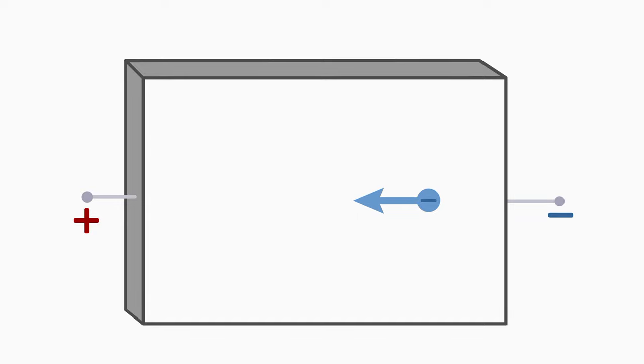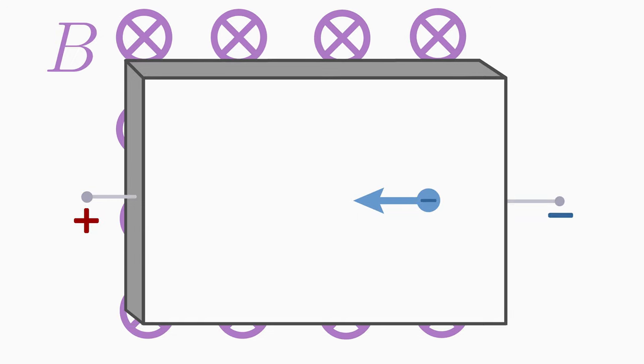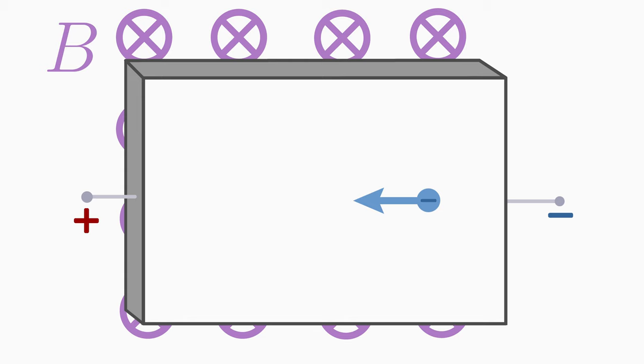But if you now put the metal into a homogeneous magnetic field B, whose field lines penetrate the metal, then a magnetic force acts on the moving electrons and deflects them upwards.